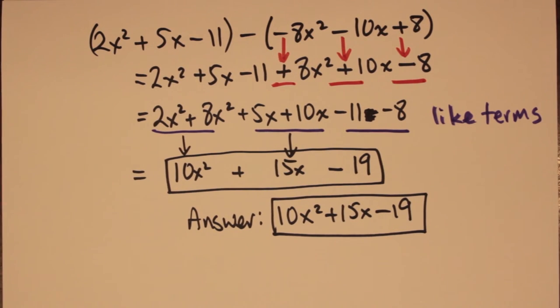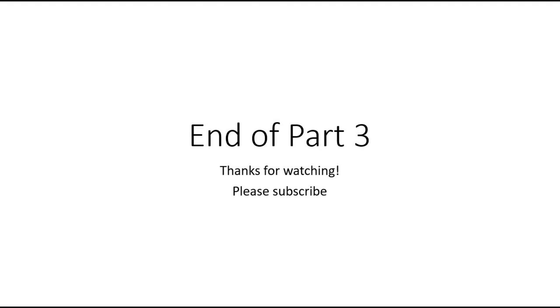So your answer then is 10x squared plus 15x minus 19. In this case, when we subtracted 2 polynomials, all of the terms were preserved. We had our x squared term in our answer, our x in our answer, and our 19 in our answer. Thank you.